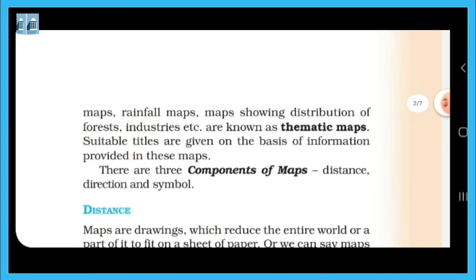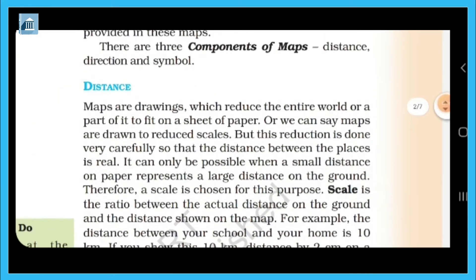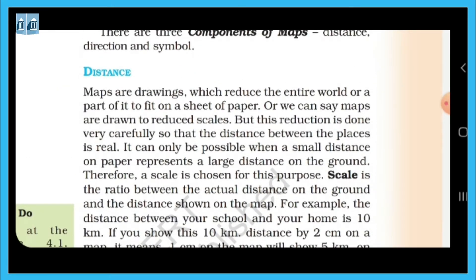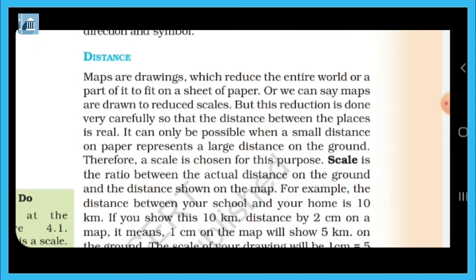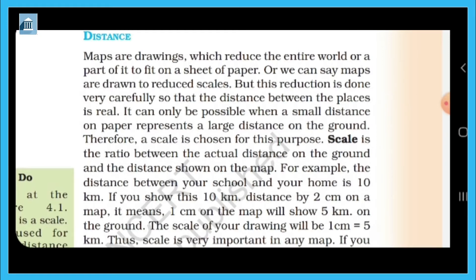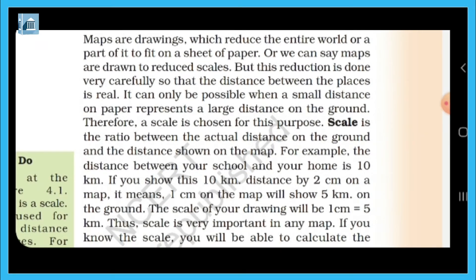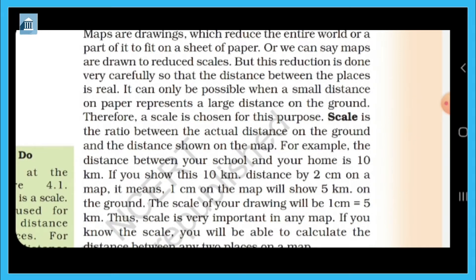There are three components of the map. To represent the entire world or a part of it on a sheet of paper, the map has to be drawn at a reduced scale. The actual distance between places can only be represented when a small distance on paper represents a large distance on the ground. Therefore, a scale is chosen for this purpose.